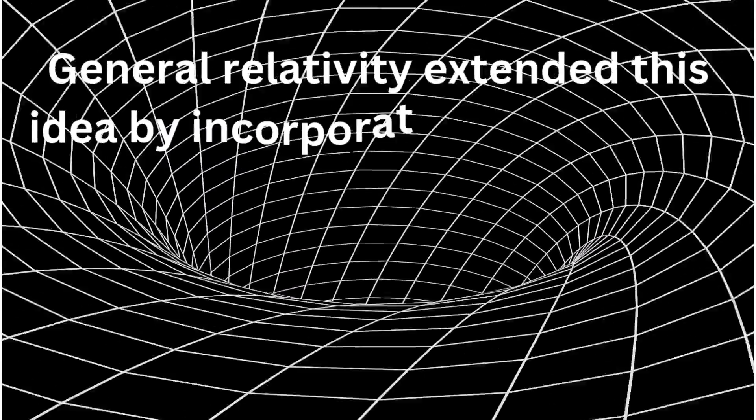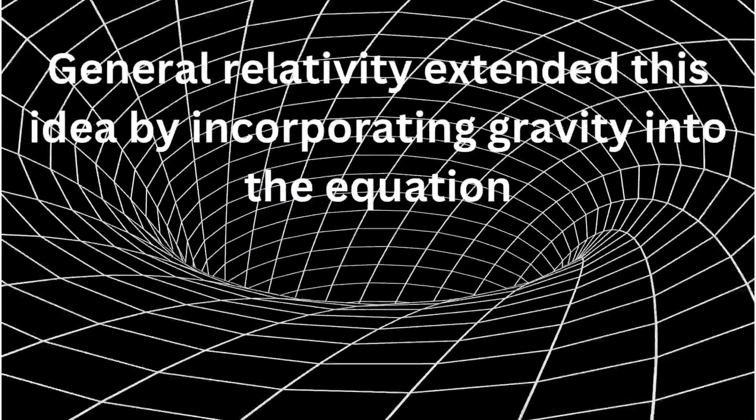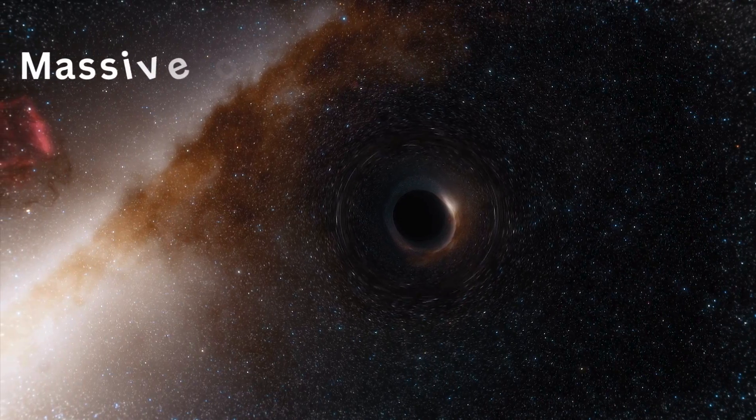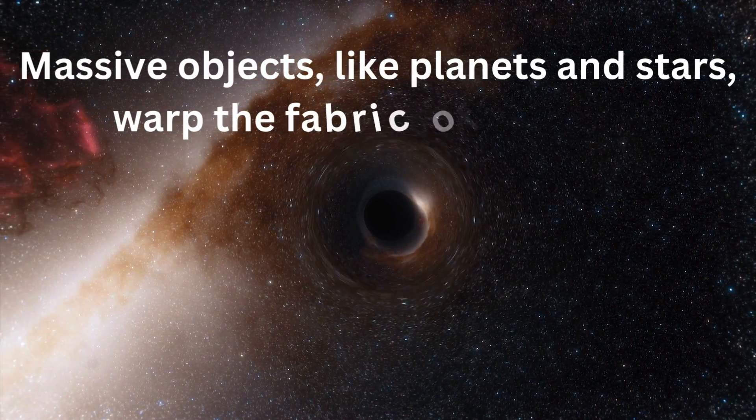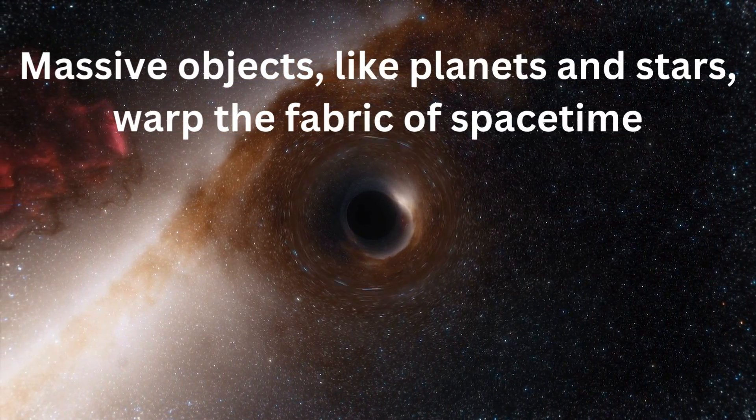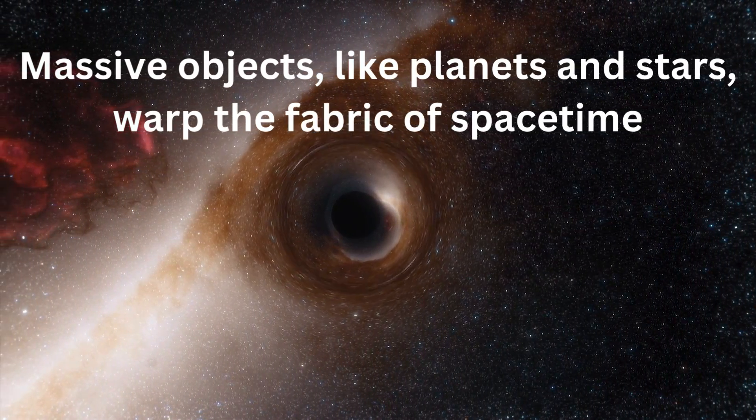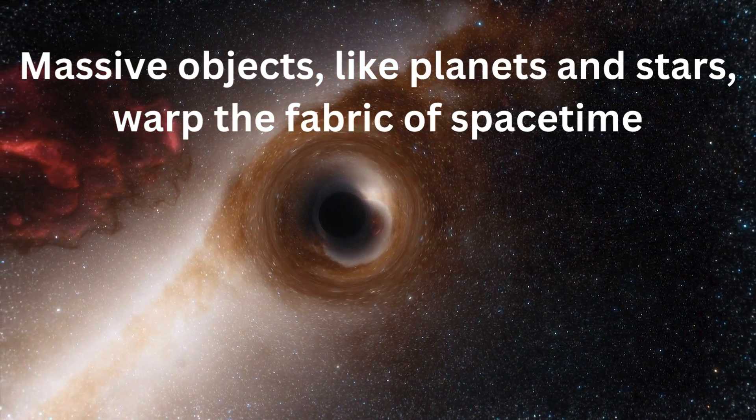General relativity extended this idea by incorporating gravity into the equation. Einstein proposed that massive objects, like planets and stars, warp the fabric of space-time. This warping affects the flow of time.